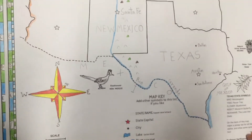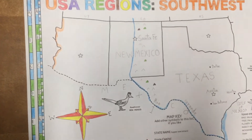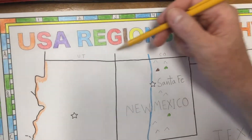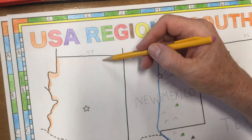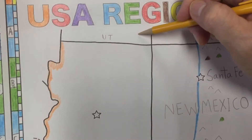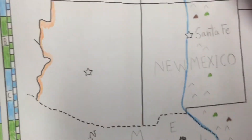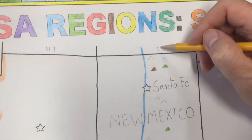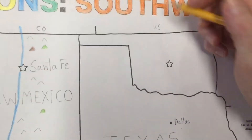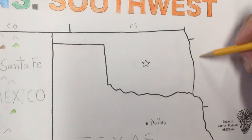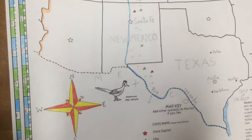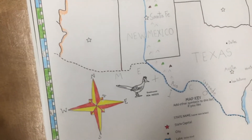Another fun thing you can do on the map is identify the neighboring states along the borders of this region. For example, this would be Utah, right above Arizona, and just above New Mexico is Colorado. Just above Texas is Oklahoma, and above Oklahoma is Kansas. You can add more states along the edges too — it gives a little more geographic information to your region map.